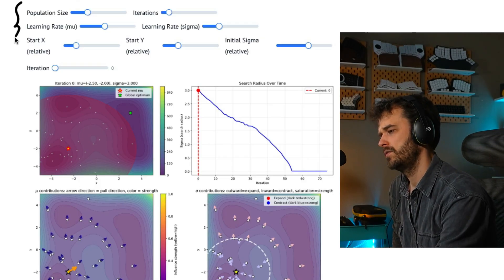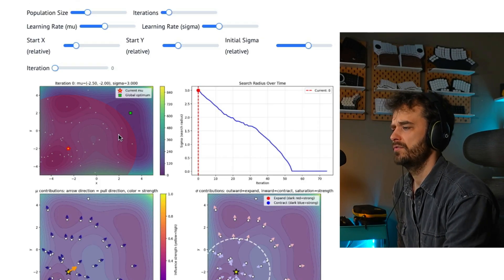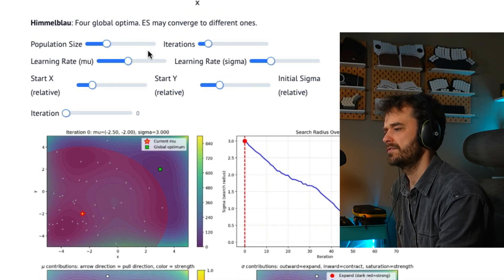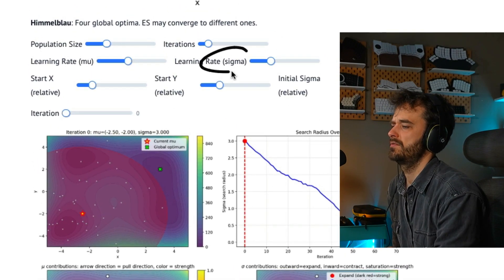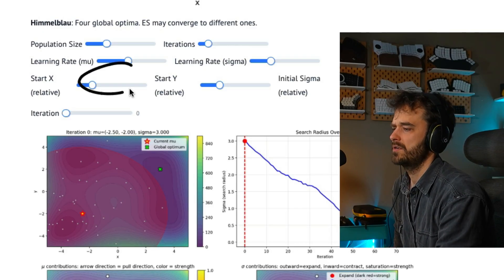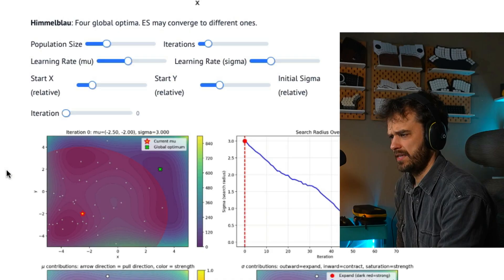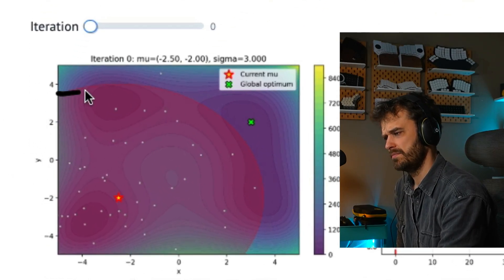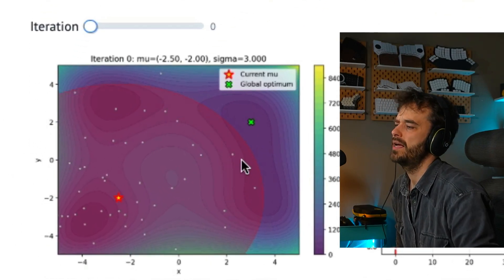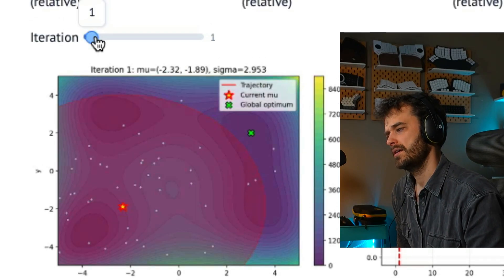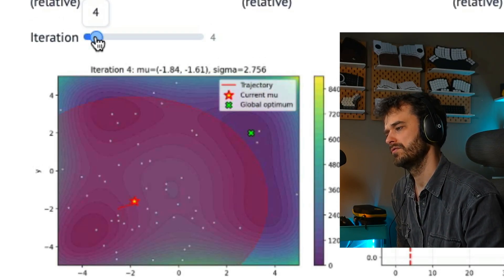So here's a demo that I ended up creating. On top over here, there are a whole bunch of settings that you can go for. So what's the population size, how many iterations, learning rates for the average propagation and for the sigma, the variance, starting points and iteration. And then the whole point is that on this chart over here, you see this big region that we're sampling from. That's the red. And I can, let me just do this with the keyboard. I can move through all these different iterations. You can see this thing move.